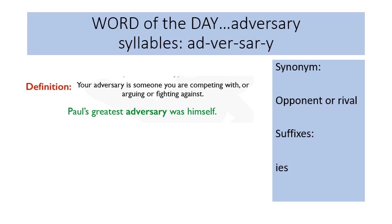Have a turn to say the word and break it up into syllables. Now you understand what adversary means. There are two synonyms for adversary: one is 'opponent' and the other is 'rival' — they mean exactly the same thing. You can add the suffix I-E-S to turn adversary into 'adversaries,' making it plural, which means more than one.